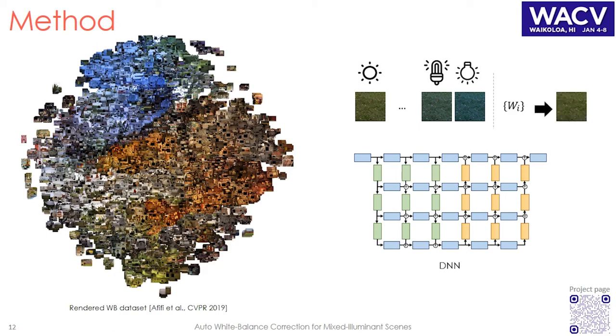By training on patches of single-illuminant scenes, and given the fact that our network is fully convolutional, we can deal with mixed-illuminant scenes by convolving over the image to get the mixed-illuminant weighting maps.